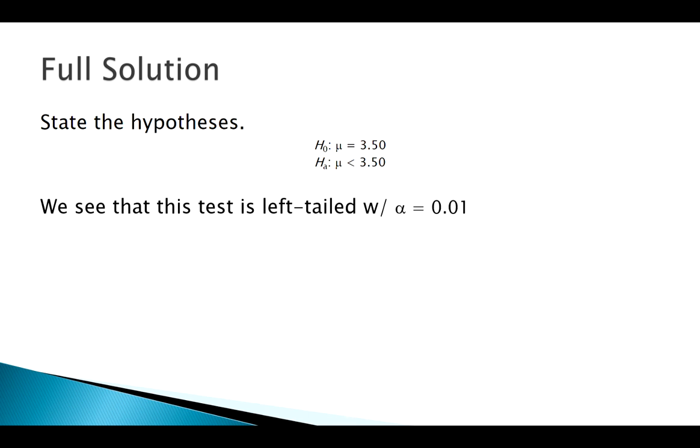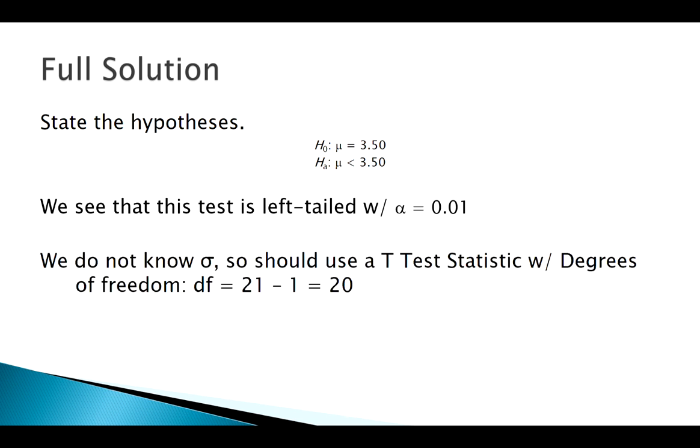Our first step to a hypothesis test is, of course, state your hypotheses. We know the national average was 3.50. We think that our average is actually less than 3.50, so it's a left-tailed test. Remember, alpha was 0.01. Now we're using t. We collected a sample size of 21, so our degrees of freedom is 20.